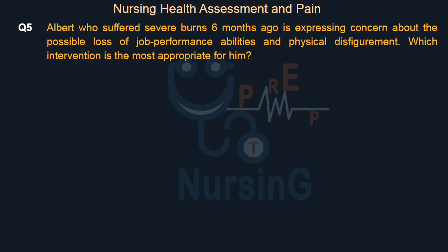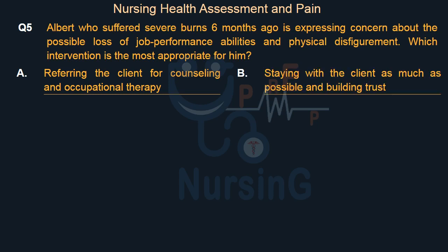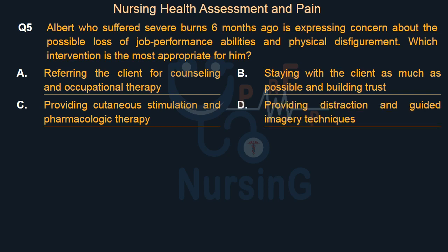Albert, who suffered severe burns six months ago, is expressing concern about the possible loss of job performance abilities and physical disfigurement. Which intervention is the most appropriate for him? Option A: Referring the client for counseling and occupational therapy. Option B: Staying with the client as much as possible and building trust. Option C: Providing cutaneous stimulation and pharmacologic therapy. Option D: Providing distraction and guided imagery techniques.